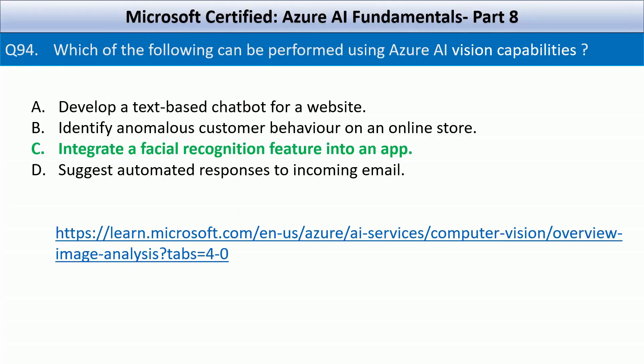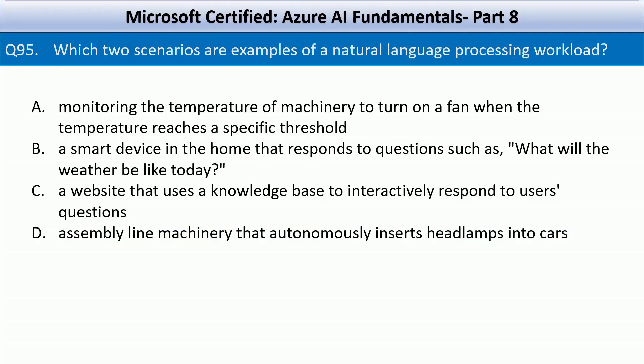Question number 95. Which two scenarios are examples of a natural language processing workload? Your options are: monitoring the temperature of machinery to turn on a fan when the temperature reaches a specific threshold; a smart device in the home that responds to questions such as 'what will the weather be like today?'; a website that uses a knowledge base to interactively respond to users' questions; assembly line machinery that autonomously inserts headlamps into cars. Monitoring the temperature of machinery to turn on a fan is sensor-based automation — it's more related to IoT or rule-based logic, not NLP.